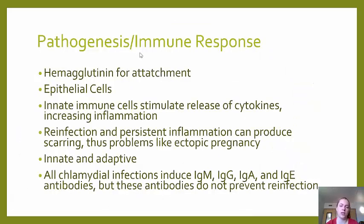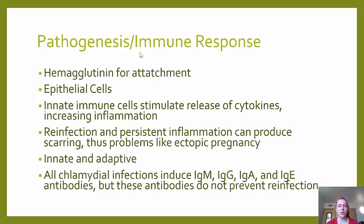The pathogenesis of Chlamydia: it uses hemagglutinin for attachment to epithelial cells. When this occurs, innate immune cells stimulate the release of cytokines, increasing inflammation involving both the innate and adaptive immune systems. However, they are not very effective at detecting it because Chlamydia is an intracellular infection. Reinfection and persistent inflammation can produce scarring, causing problems like ectopic pregnancy. All chlamydia infections induce IgM, IgG, IgA, and IgE antibodies, but these do not prevent reinfection.